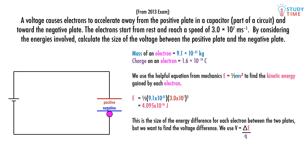We use voltage equals delta E over q. Substituting in values, we get 4.095 times 10 to the negative 16, divided by 1.6 times 10 to the negative 19, equals 2.6 times 10 to the 3 volts. That wasn't too hard, was it?